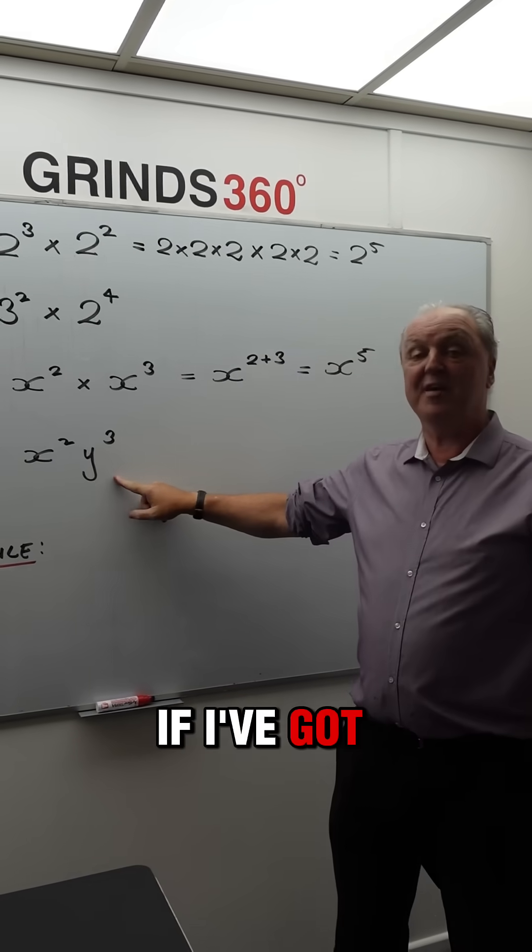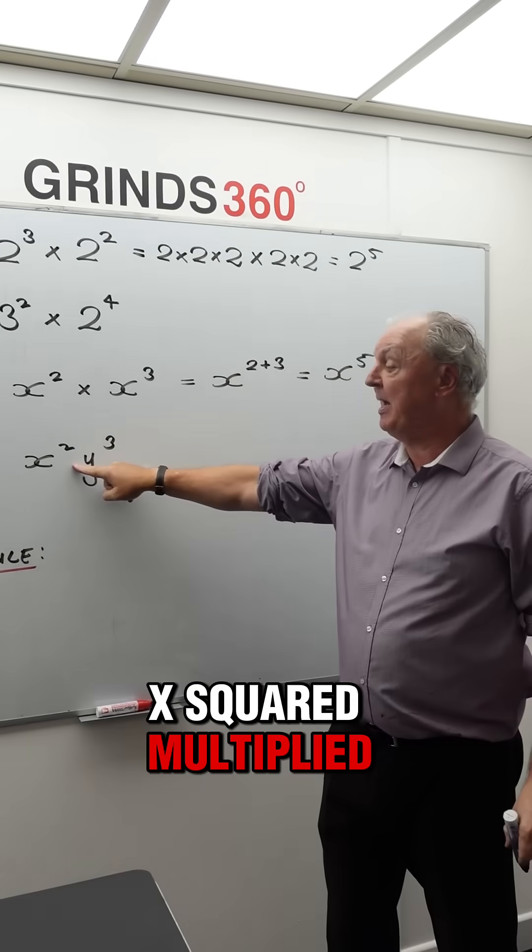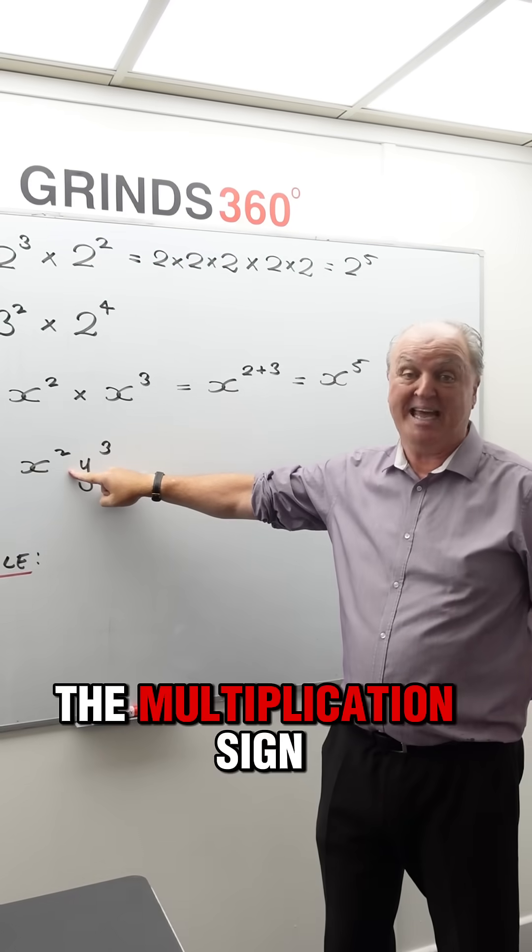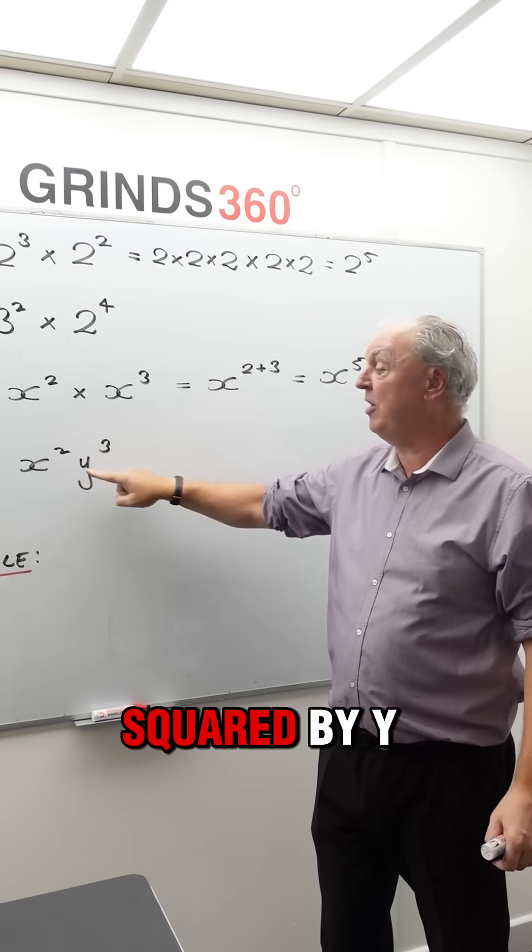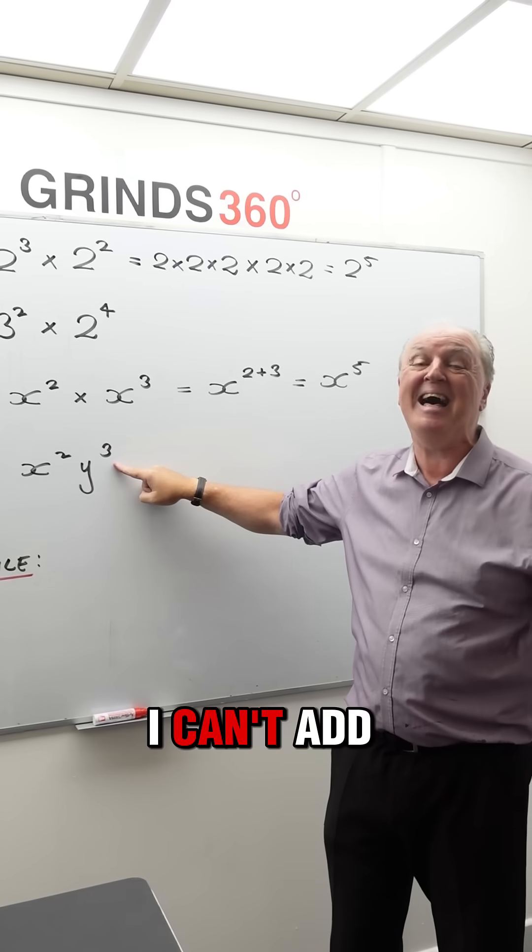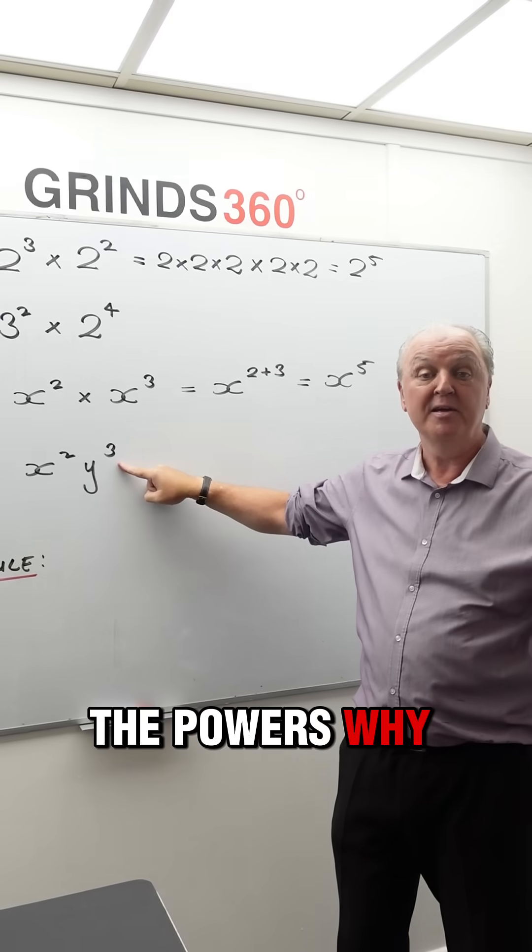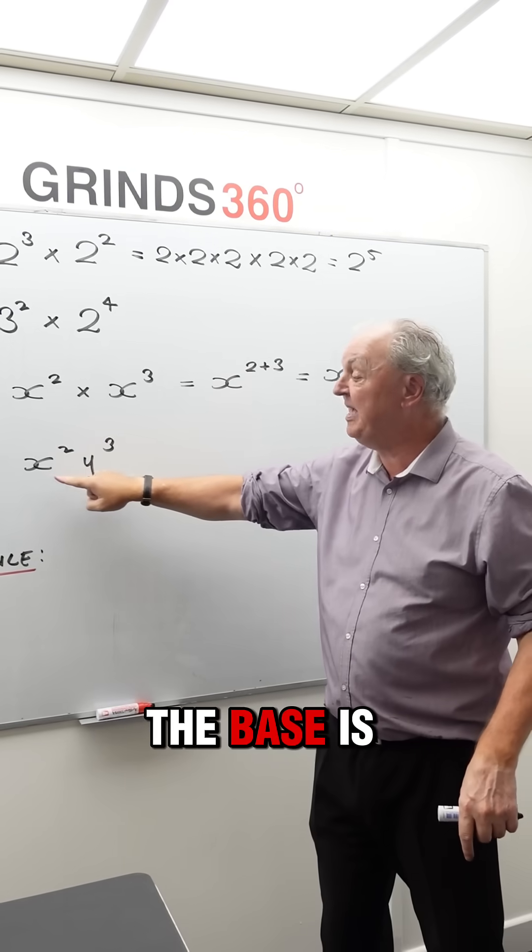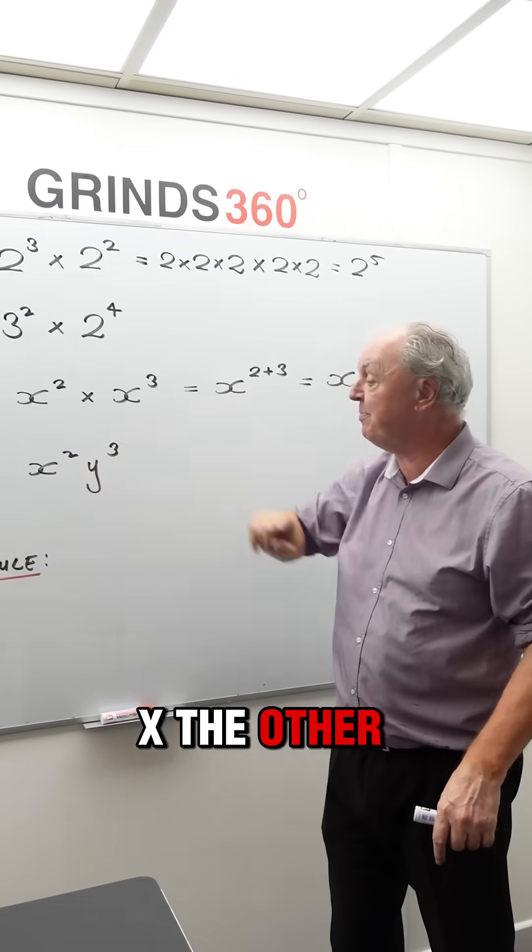And of course, if I've got x squared multiplied by—I don't have to put in the multiplication sign if I don't want to—x squared by y cubed, I can't add the powers. Why? Because the base is different. One base is x, the other base is y.